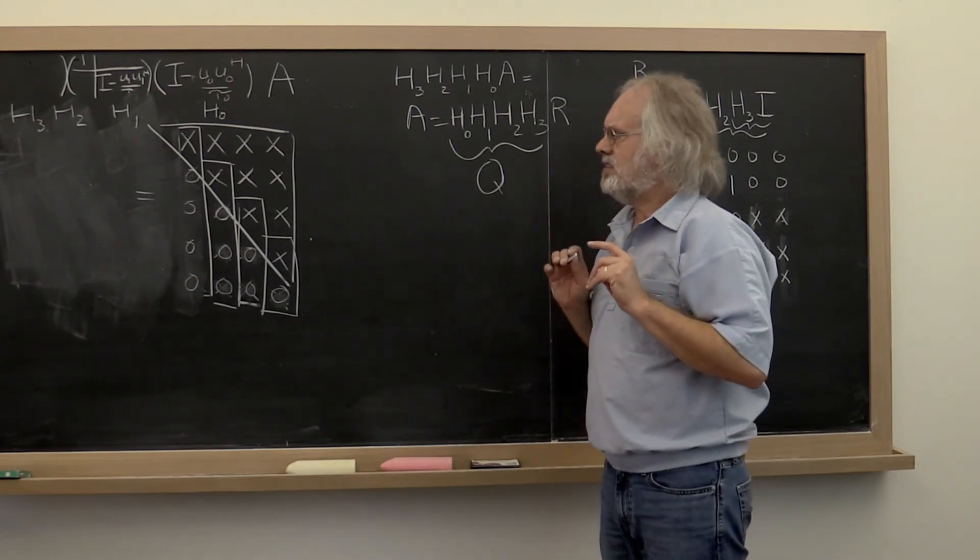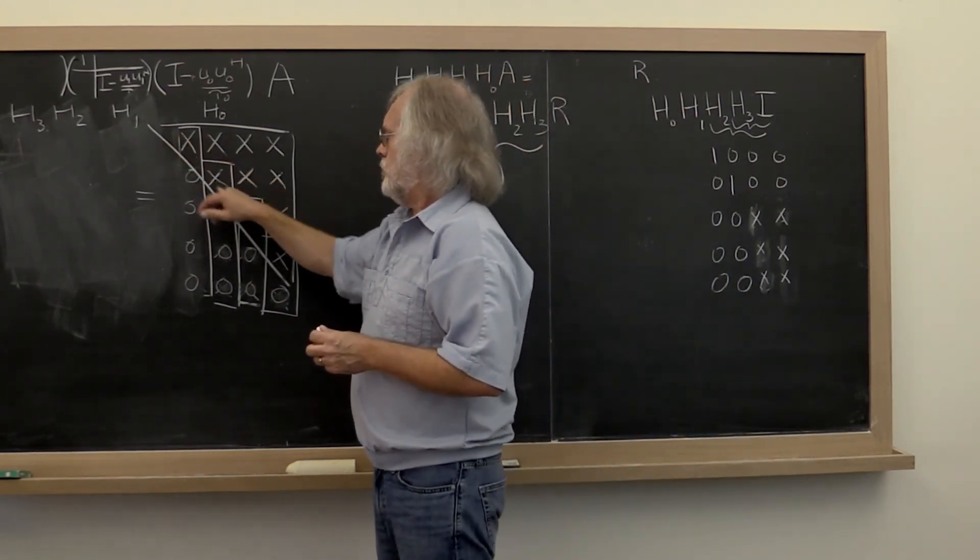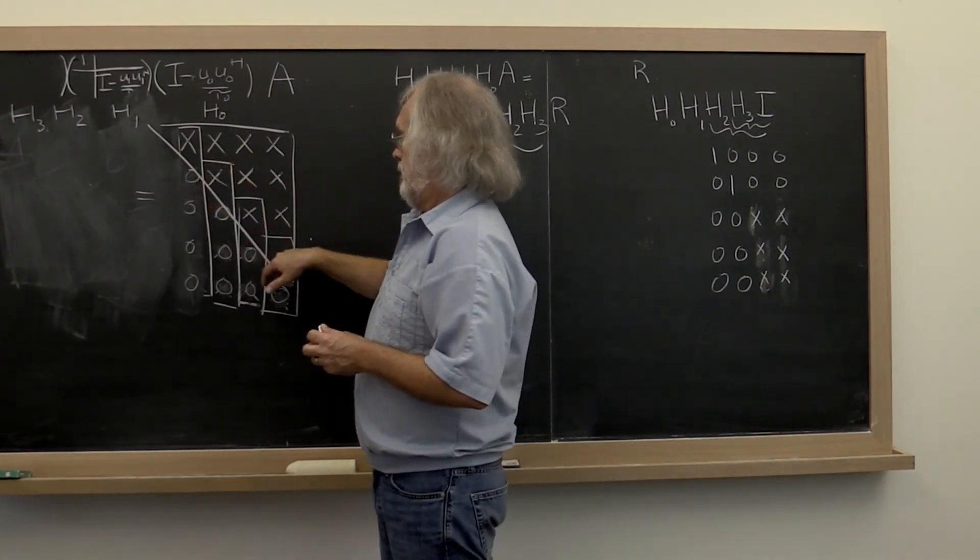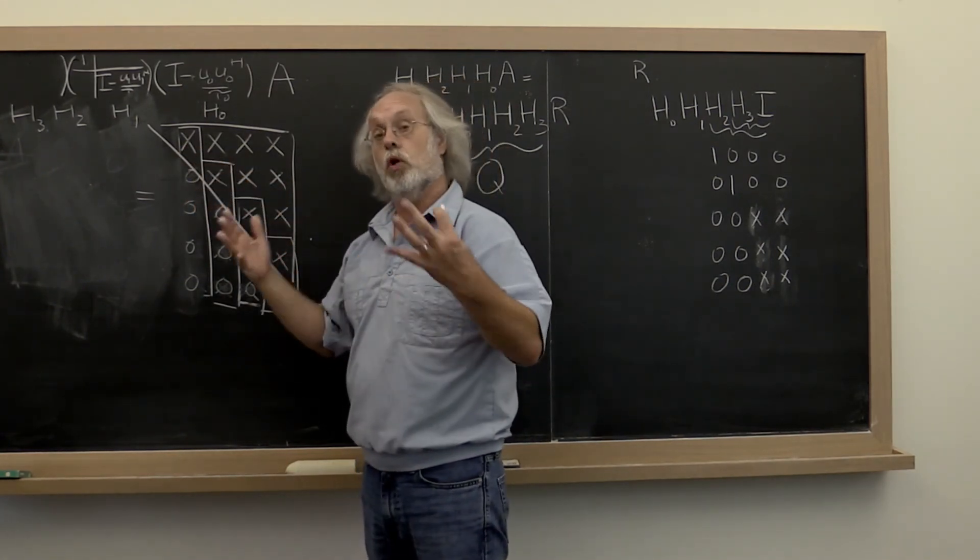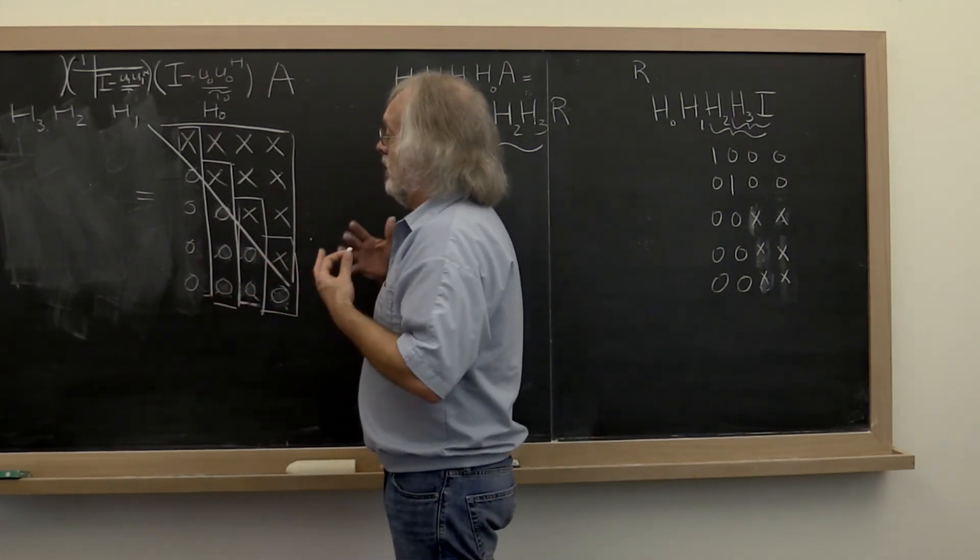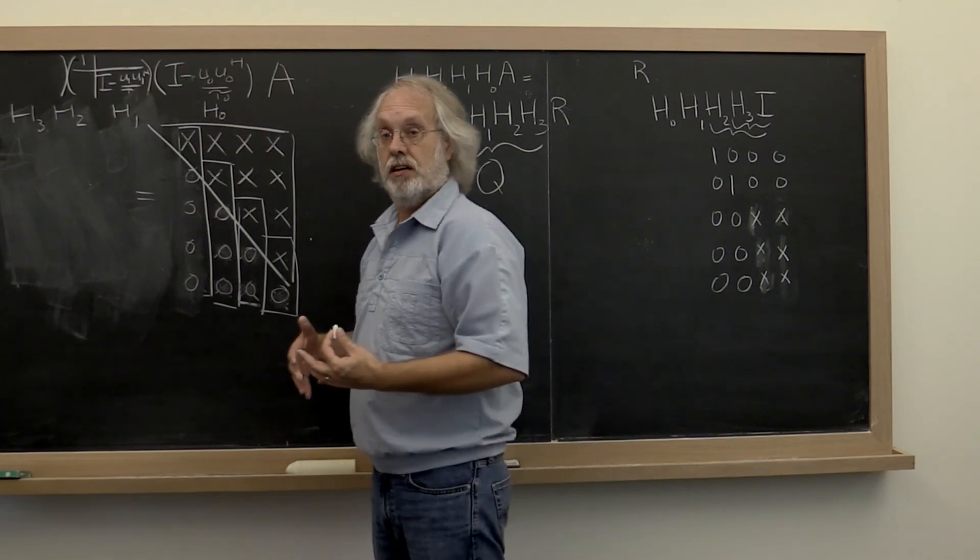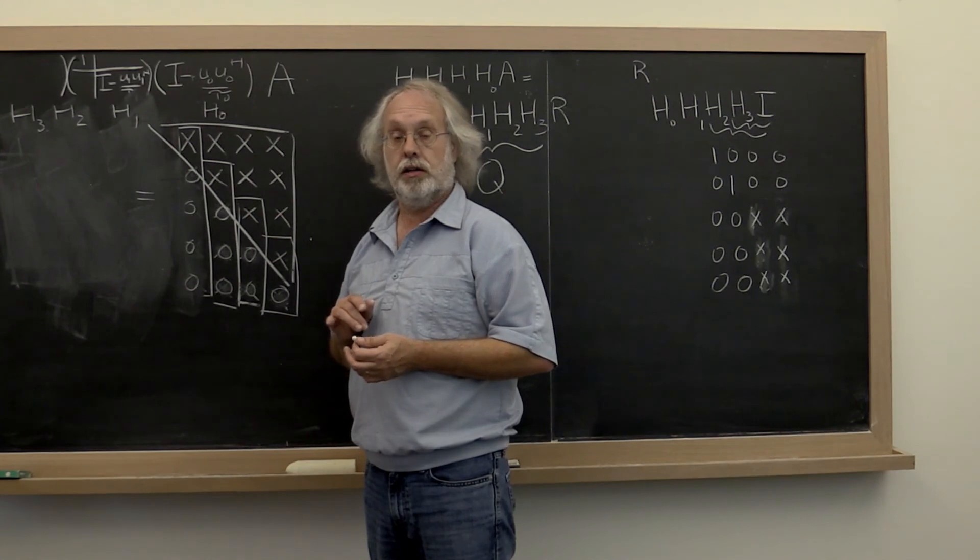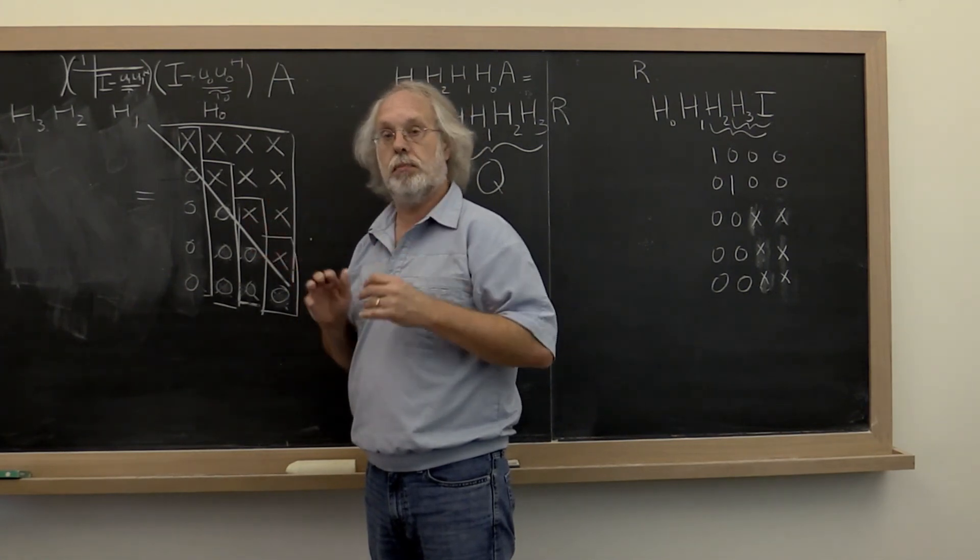Not quite. Why? Because when you use householder transforms you may put a positive or a negative value on the diagonal, if we're working with real valued matrices, while the Gram-Schmidt process forced positive values to appear on the diagonal. But that's a minor detail.